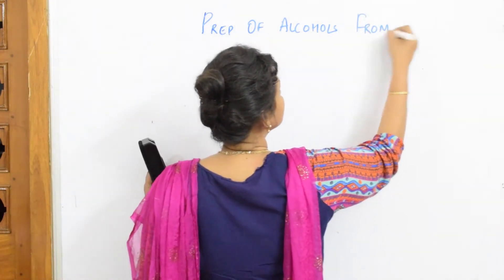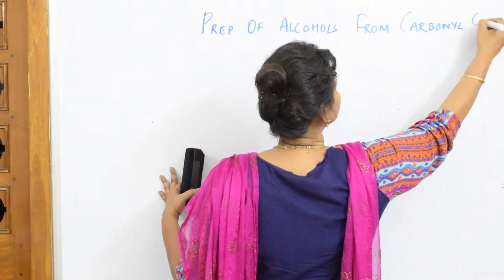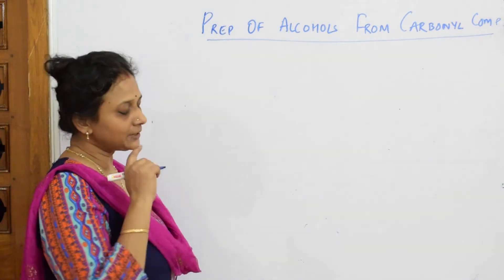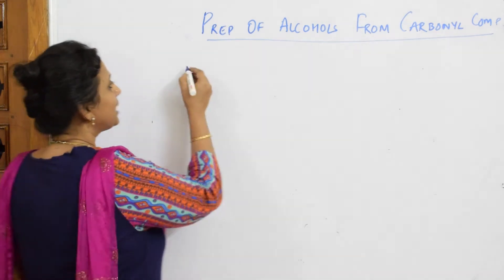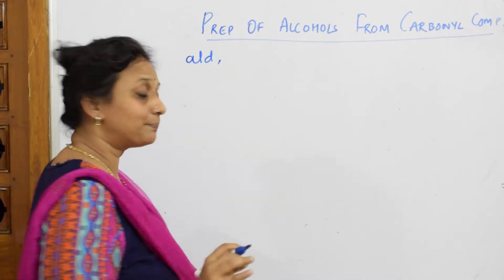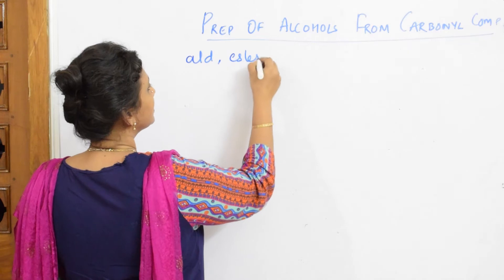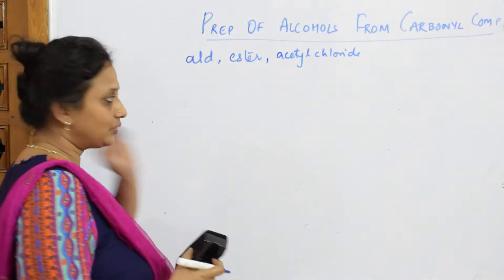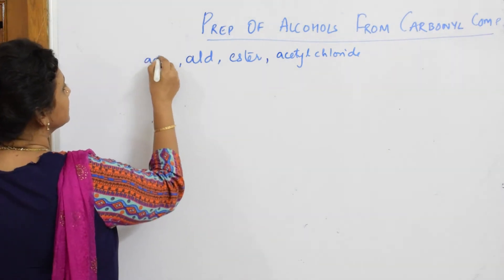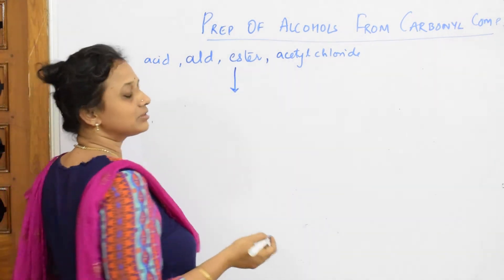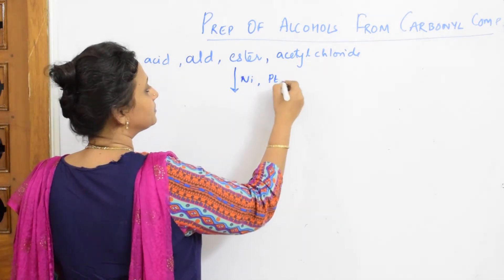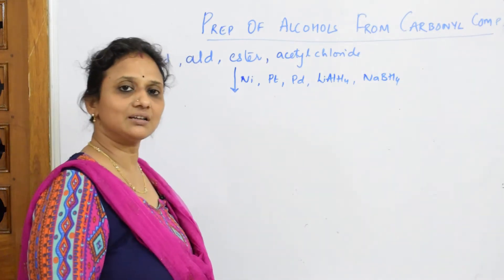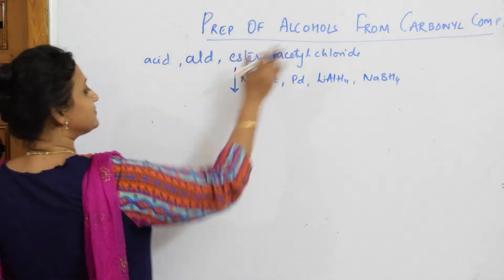Preparation of alcohols from carbonyl compounds. Now let me give you a certain clue so that it's easy to remember. Whenever a carbonyl compound like an aldehyde, an ester, or acetyl chloride — or whenever an acid is given — and these are treated with reducing agents like nickel, platinum, palladium, lithium aluminum hydride, or sodium borohydride, all these are reducing agents and they act by adding hydrogen.